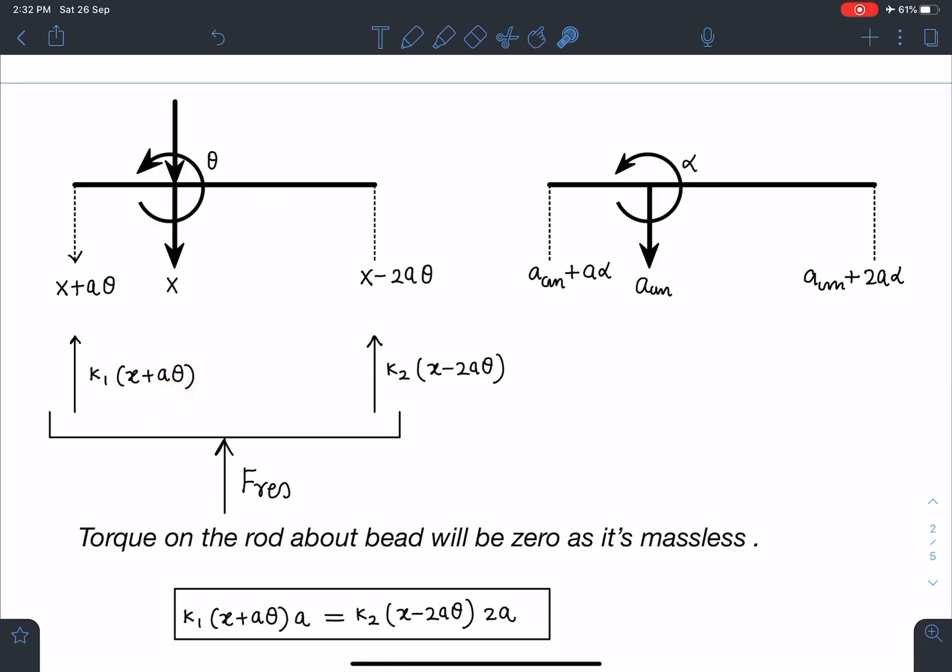And similarly here, this end overall compression I can say at spring 2 is going to be x minus 2a·theta. So there is going to be upward force of k₂(x - 2a·theta). So overall I can say this is the net force which is going to restore this system back to its original configuration or you can say equilibrium position.